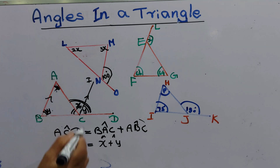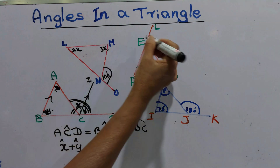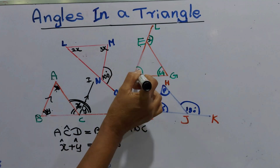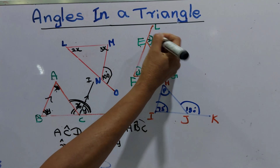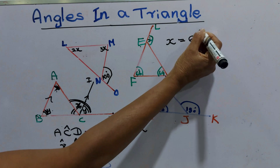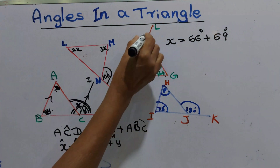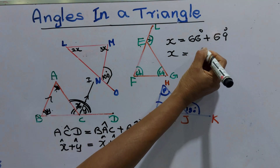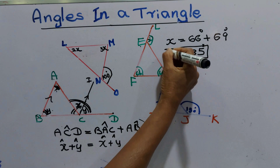Now we can apply this formula to these triangles to find the value of X. Look at this EFG triangle. Given the F value and the G value, and the exterior angle value is X. X equals to 66 degrees plus 69 degrees. That is the formula we found: the exterior angle equals to the opposite two interior angles. X equals to 135 degrees.